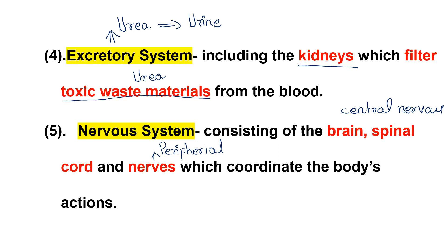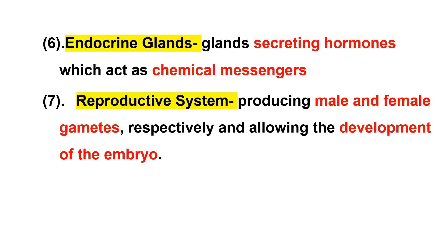The endocrine system includes the endocrine glands. The endocrine system secretes hormones. A hormone is a chemical substance that regulates body processes.